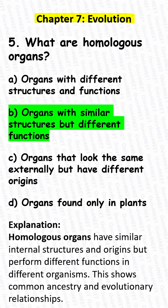Correct answer: B. Organs with similar structures but different functions. Explanation: Homologous organs have similar internal structures and origins but perform different functions in different organisms. This shows common ancestry and evolutionary relationships.